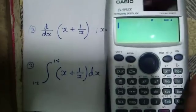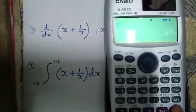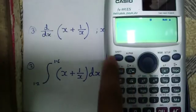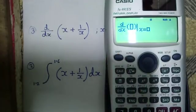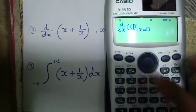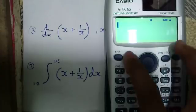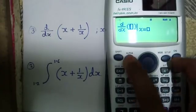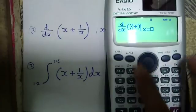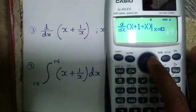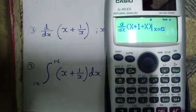The ninth feature is differentiation using shift and the integral button. Using the same expression — (x plus 1) divided by x — we can find the derivative at x equals 5.